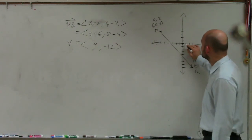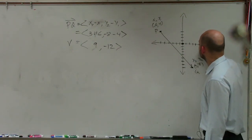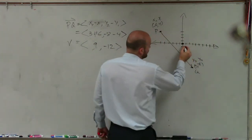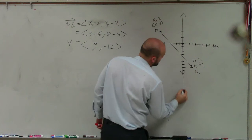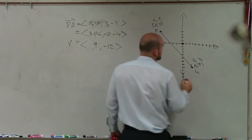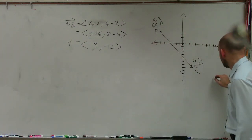So I'm going to go over 9. So 1, 2, 3, 4, 5, 6, 7, 8, 9, and then down negative 12. 1, 2, 3, 4, 5, 6, 7, 8, 9, 10, 11, 12. So over 9, down negative 12.